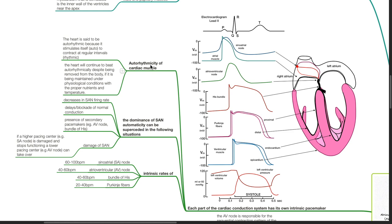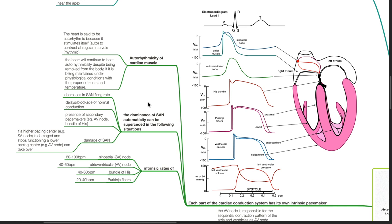Each part of the cardiac conduction system has its own intrinsic pacemaker. The heart is said to be autorhythmic because it stimulates itself to contract at regular intervals, and will continue to beat autorhythmically despite being removed from the body if maintained under physiological conditions. The dominance of the sinoatrial node can be superseded by decreases in SA node firing rate, delays or blockade of normal conduction, presence of secondary pacemakers such as the AV node and bundle of His, and damage of the sinoatrial node.